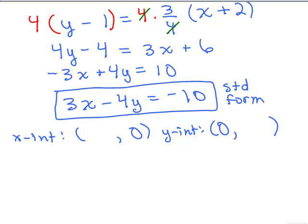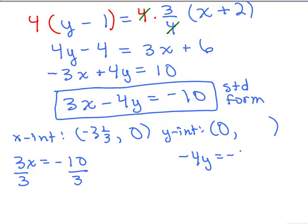If I put in 0 for y into this standard form, I get 3x equals negative 10, so x is negative 10-thirds — I'm going to write that as negative 3 and 1-third. Now I have to put in 0 for x, so that gives you negative 4y equals negative 10, so divided by negative 4, I get y equals 5-halves, which is 2 and 1-half.